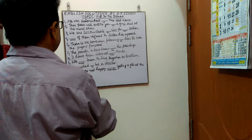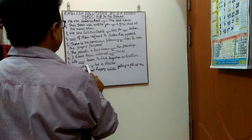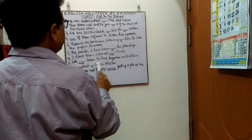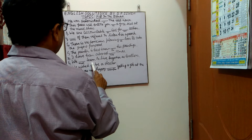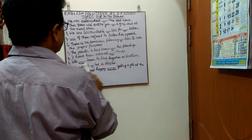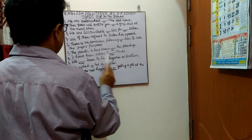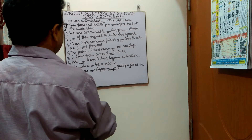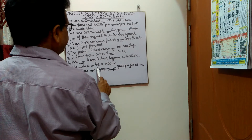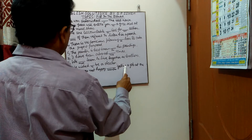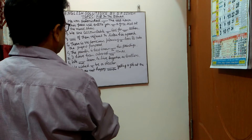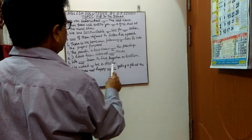Next sentence: 'He wish to ___ be a doctor.' In the blank you have to put 'to'. The sentence will be: He wish to be a doctor.